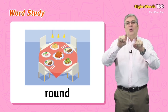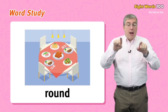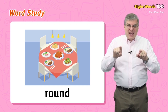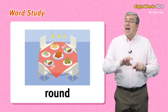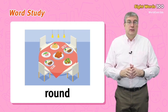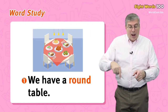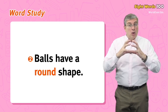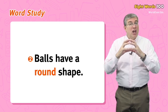Next we have round. Round is a shape — it's like a circle. A round shape has no corners. For example, we have a round table, or balls have a round shape.